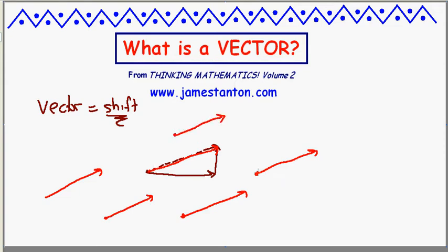A vector is represented by an arrow. For example, any one of these arrows represents the shift, in which case this vector represents the shift two to the right and one up. But no particular arrow is the vector. It just represents the total shift everywhere. Every point moves the same amount.